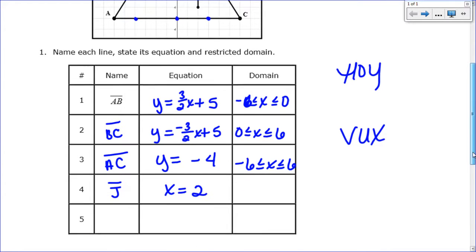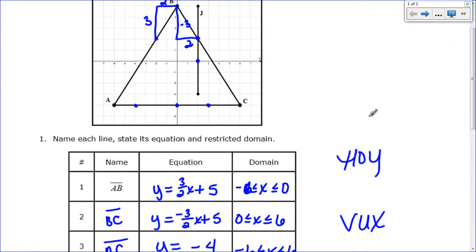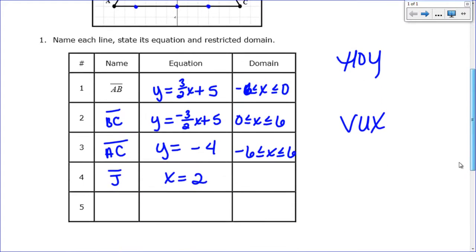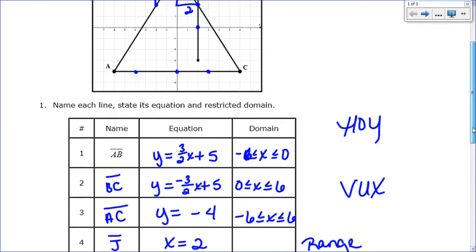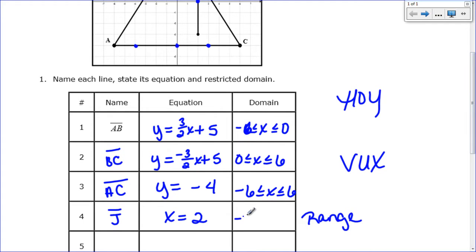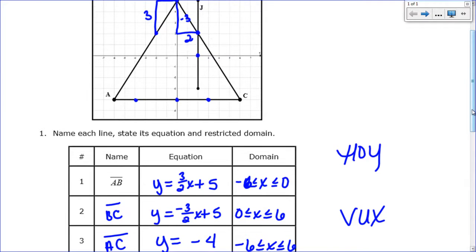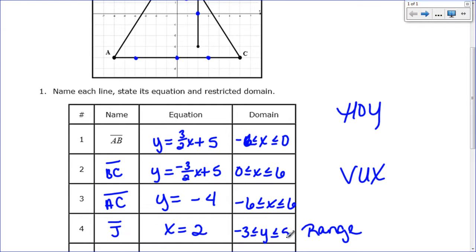Now because we're doing a vertical line, the domain is just x equals 2 because it doesn't go left or right at all. So when we actually do this one, we're going to establish the range. Vertical lines will always be a range, not a domain. And so we'll go from bottom to top. And so at the bottom, it looks like that graph starts at negative 3. And this time it's a y value because we're doing range. And it ends up here at the top at 5. So it goes all the way from -3 ≤ y ≤ 5.